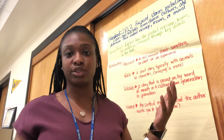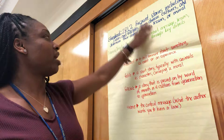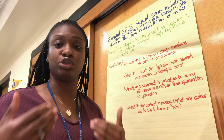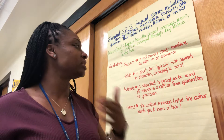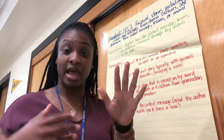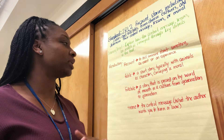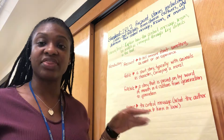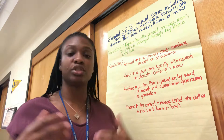Before we get into our actual lesson, I want you to look at these vocabulary terms. In our standard, we have a lot of different words that you may or may not be familiar with, so I'm going to review these words so that you truly understand what it is that you should be doing. Recount means to tell someone about something — an event or an experience — when you retell it; recount and retell go hand in hand. A fable is a short story, typically with animals as characters, that conveys a moral. A folktale is a story that is passed on by word of mouth within a culture from generation to generation. And then we have theme — the theme is the central message, or what the author wants you to learn or know.